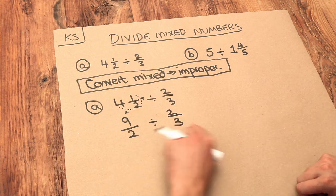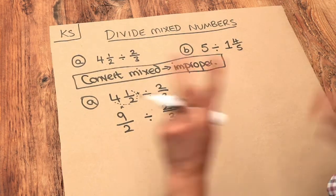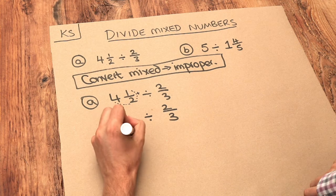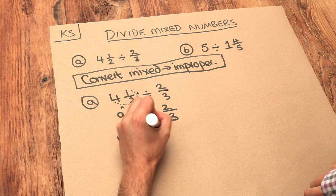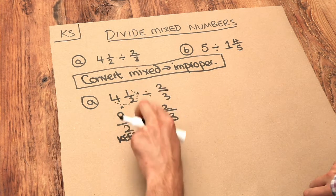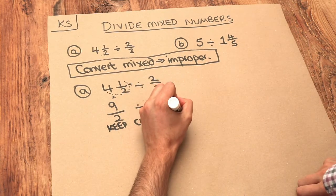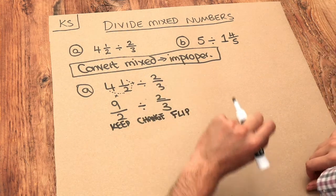At this point we can divide our fractions how we usually would, and I use the keep-flip-change method. So we keep this as it is, we change this symbol from a divide into a times, and the two-thirds we flip. The posh word is to say we reciprocate it.